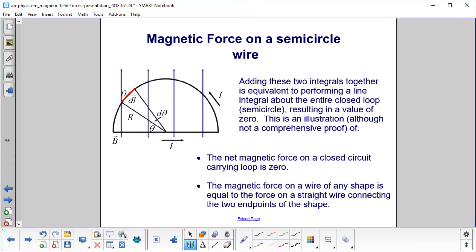Adding these two integrals together is equivalent to performing a line integral about the entire closed loop, which is a semicircle. It results in a value of zero. This is an illustration, although certainly not a comprehensive proof.